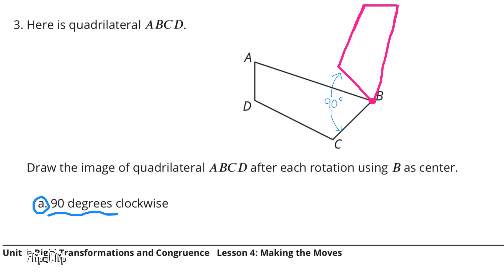Here's a look at the image after a 90 degree clockwise rotation. I can draw a square inside here to show you that this is a 90 degree angle, because squares are made up of four 90 degree angles.